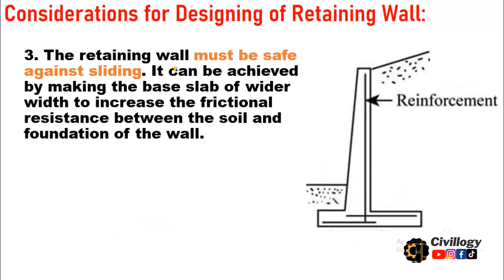Consideration three: The retaining wall must be safe against sliding. If there is insufficient friction at the base, the backfill — whether earth, water, or other material — will push the wall and cause it to slide. Sliding resistance can be achieved by making the base slab wider. The wider the base slab, the greater the friction, and the lower the chances of sliding.